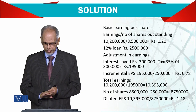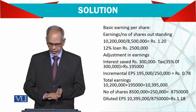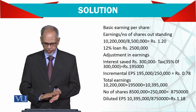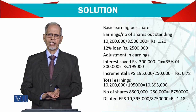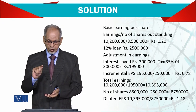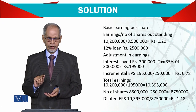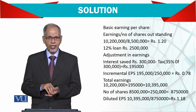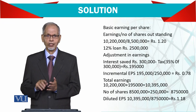Total number of shares becomes 8.75 million. Earning per share works out to 1.18. So in basic EPS it was 1.2, and in diluted EPS it has become approximately 1.18 — confirming dilution.